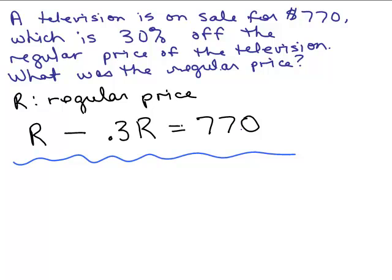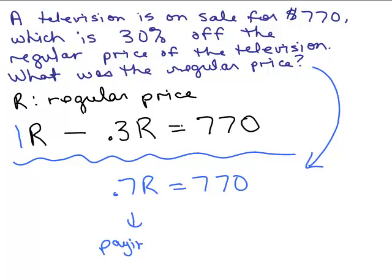So again, this is how we did it the first way. But somebody might just go directly to this. They may say, well, if it's 30% off that means I'm paying 70% of the regular price. So they might just say, 70% of the regular price is what I'm going to pay for it on sale and that is 770. Now notice that is the same thing as 1R minus .3R. So some people instead of writing R minus .3R and then combining like terms, go directly to .7R. And the way you're thinking of this is you're paying 70% of the regular price. That is the sale price. 70% of the regular price is actually equal to the sale price.